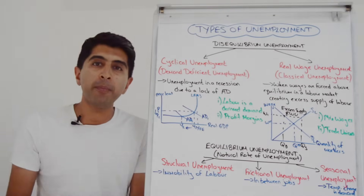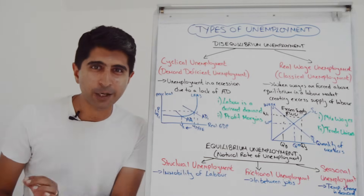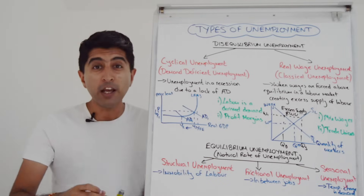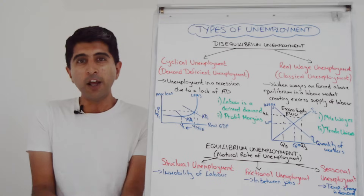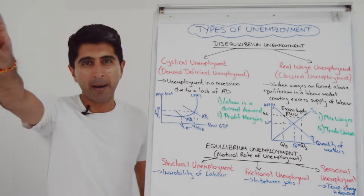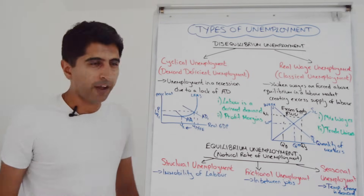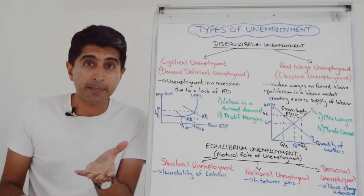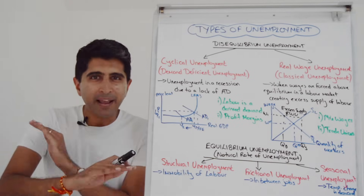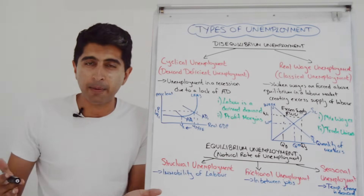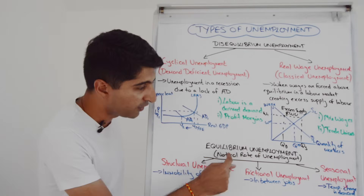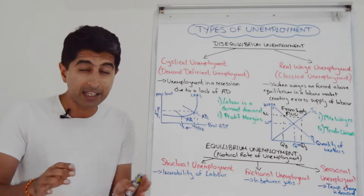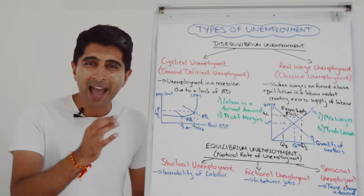Equilibrium unemployment is unemployment that can occur when the labour market is in equilibrium. That doesn't make intuitive sense, because at equilibrium in a labour market, at that wage rate, supposedly all workers who are willing and able to work are working — so how can there be unemployment? Well, there can be. If even at equilibrium there can be unemployment, there is always going to be a rate of unemployment in the economy. The best an economy can do is achieve equilibrium in the labour market, but still there is unemployment. Thus, we use the term natural rate of unemployment for equilibrium unemployment.